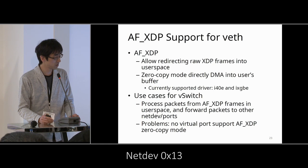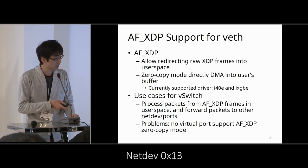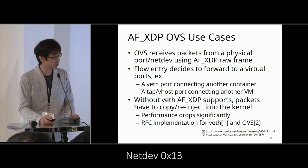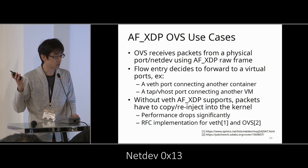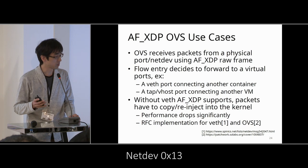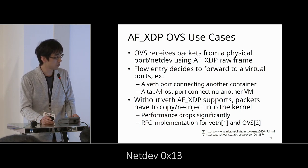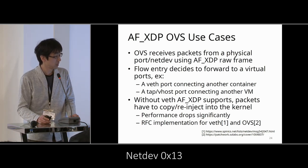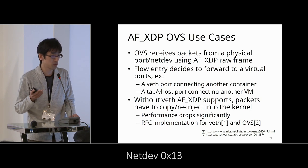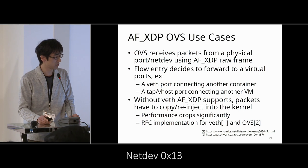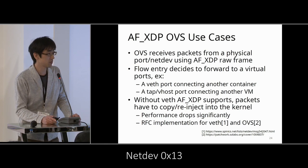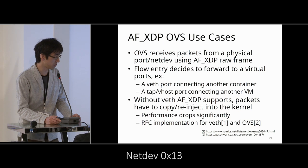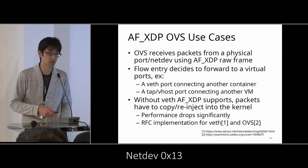The problem is that no virtual ports support AF-XDP zero-copy mode. In more detail: OVS receives packets from a physical device using AF-XDP, and a flow entry decides to forward to a virtual port — for example, a Veth port connecting to another container, or a tap or vhost port connecting to a VM. Without AF-XDP support, packets have to be copied and re-injected into the kernel, which drops performance significantly. William has proposed RFCs for Veth AF-XDP and OVS AF-XDP data paths respectively.